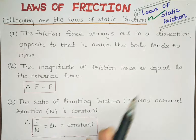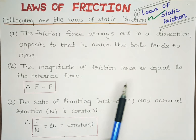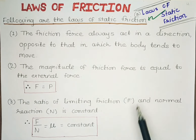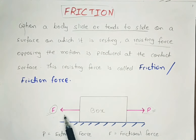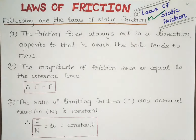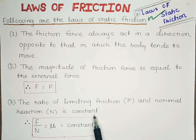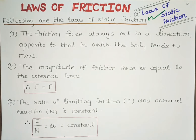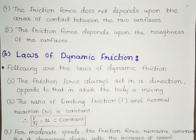That is the first law of static friction. The second law states the magnitude of frictional force is equal to the external force, so P will always equal F. The third law says the ratio of limiting friction and the normal reaction is constant: μ = F/N. This is the coefficient of friction which we understood in the last lecture.